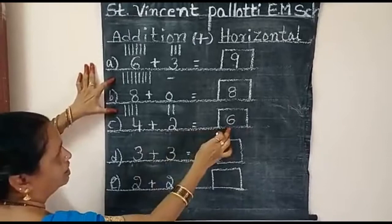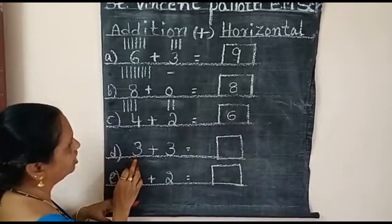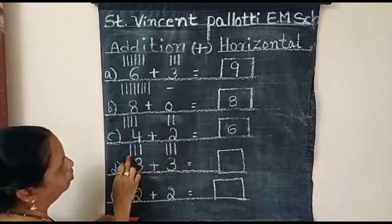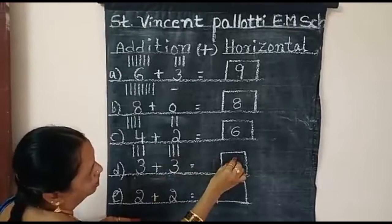Here, what number is this? Three. How many lines draw here? Three. One, two, three. Here three number. How many lines? Again three. One, two, three. Now count: one, two, three, four, five, six. Answer is six. Three plus three is equal to six.